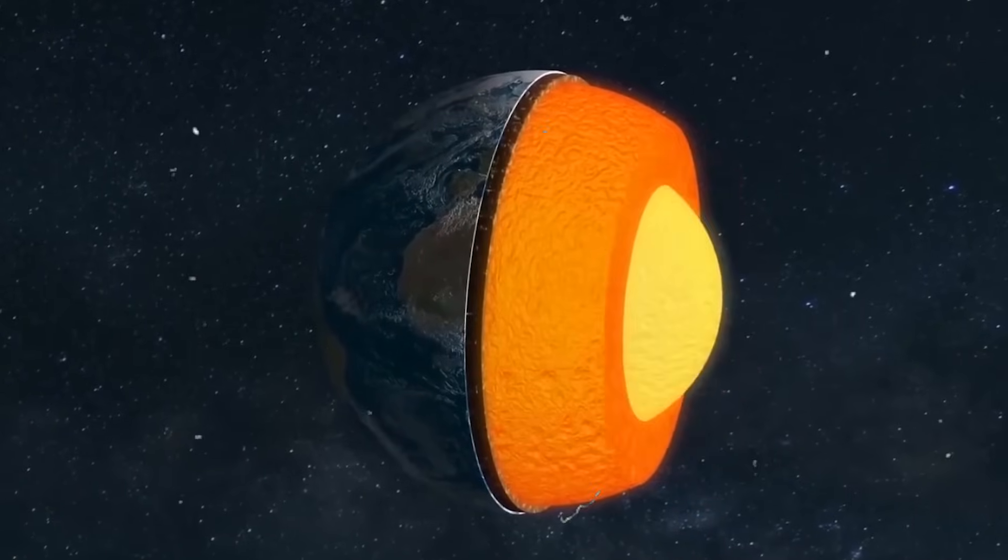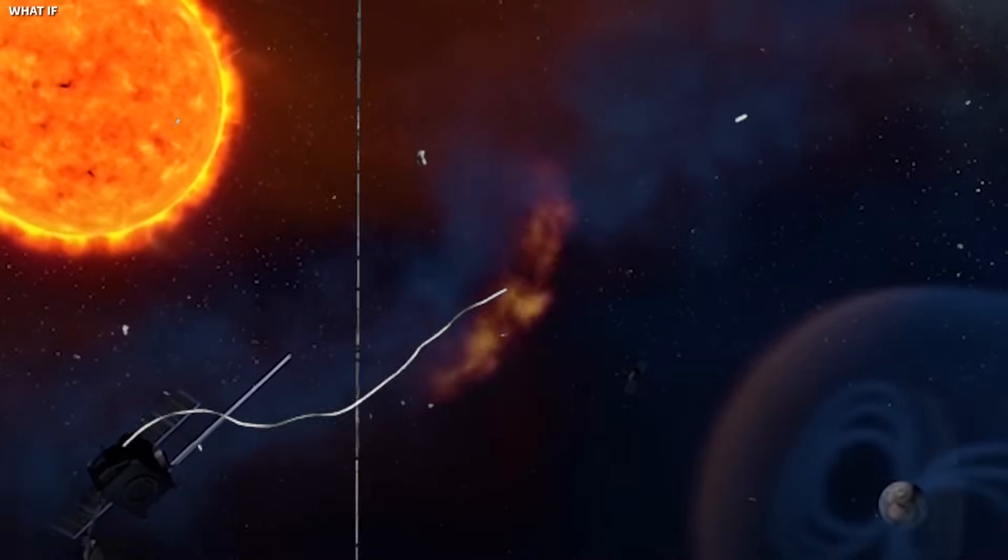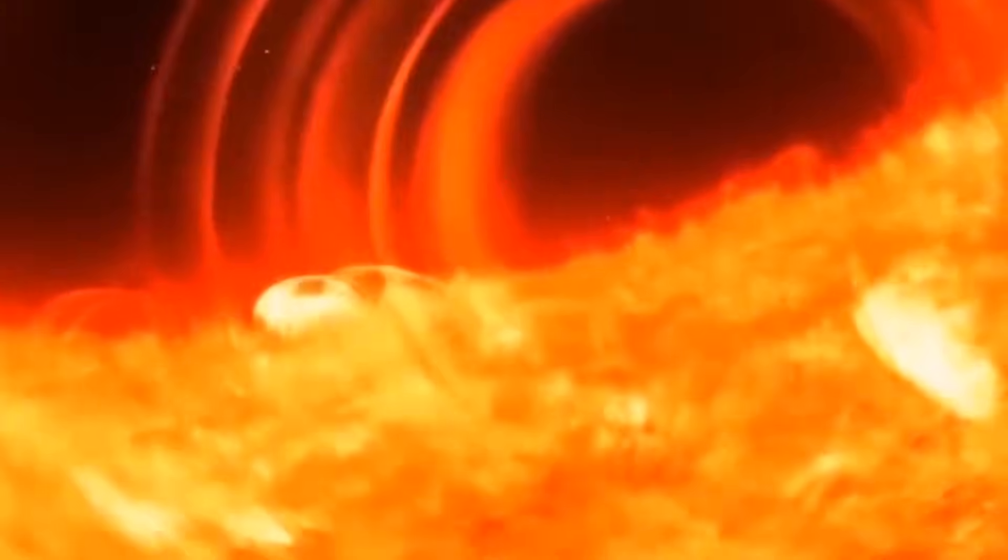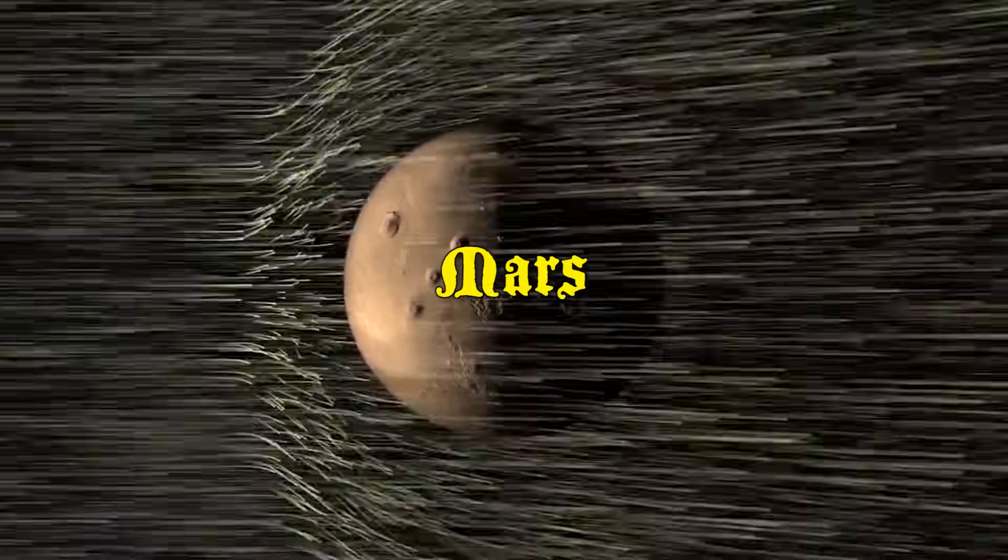It deflects streams of charged particles from the sun, preventing them from eroding the Earth's atmosphere, a situation that happened to Mars, making it barren and inhospitable.